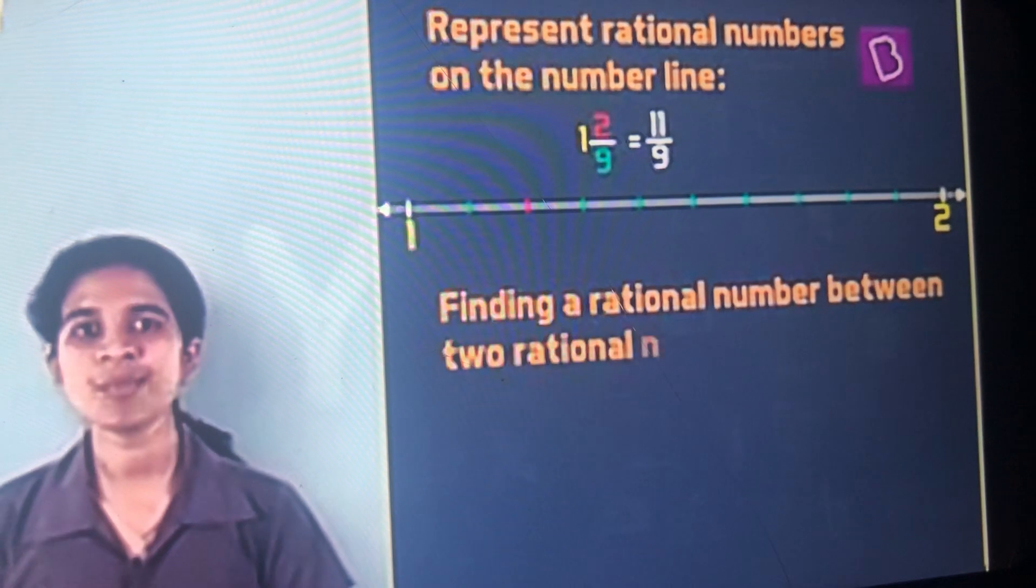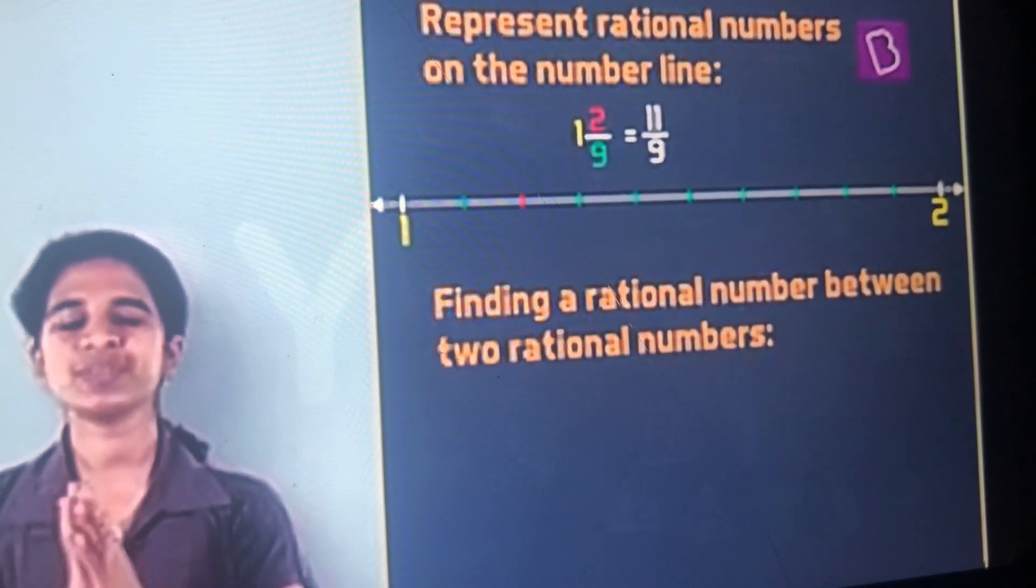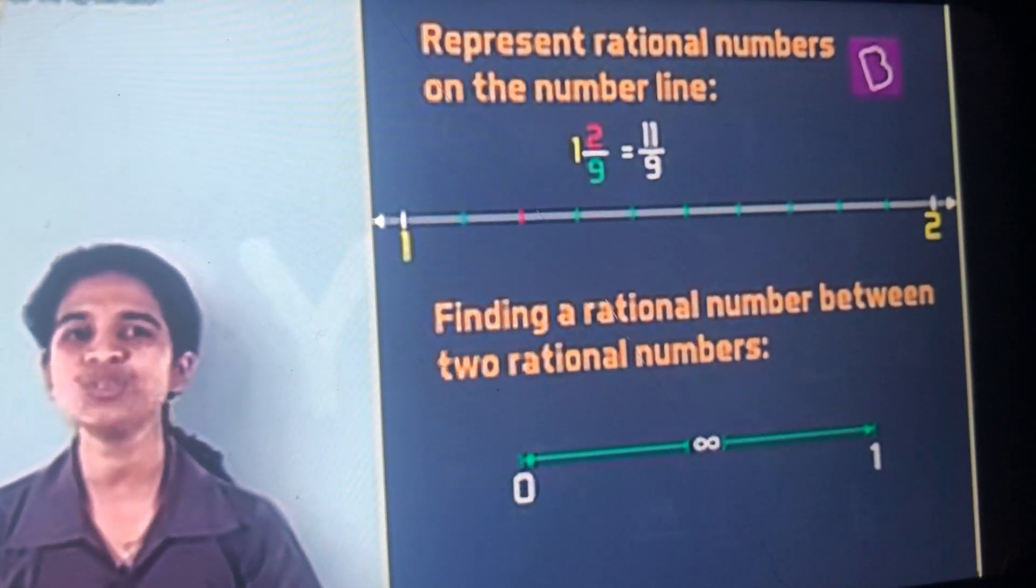Finally, finding a rational number between two rational numbers, there will always be an infinite number of rational numbers between any two rational numbers.